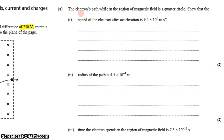Question 1, or A, says the electron's path while in the region is a quarter circle. Show that the speed of the electron after acceleration is 9.4 times 10 to the 6 meters per second. So, counterintuitively,